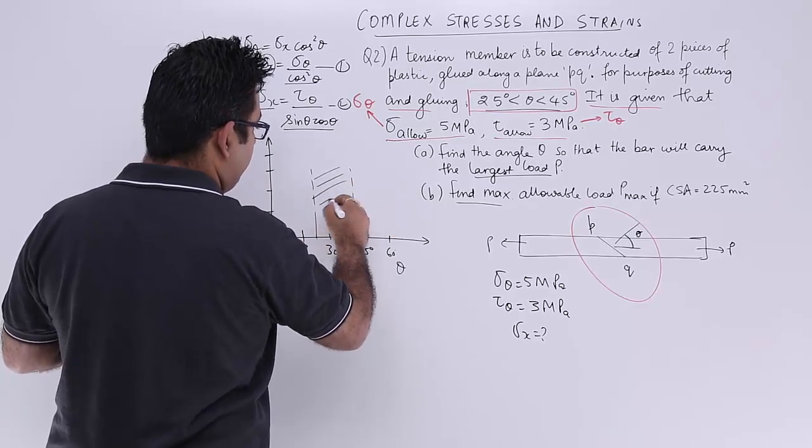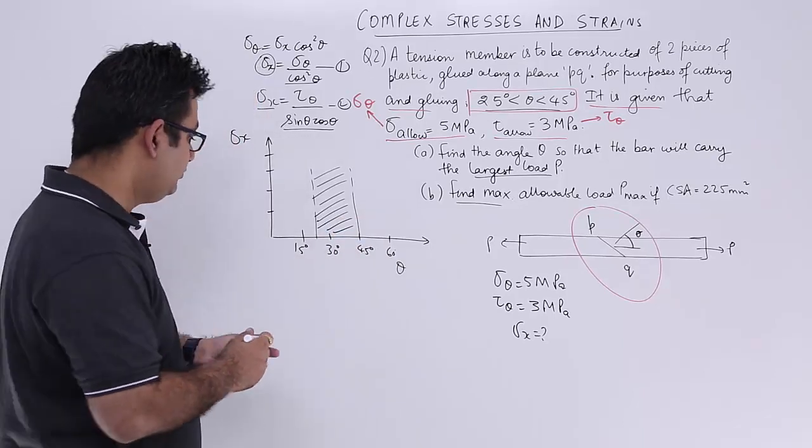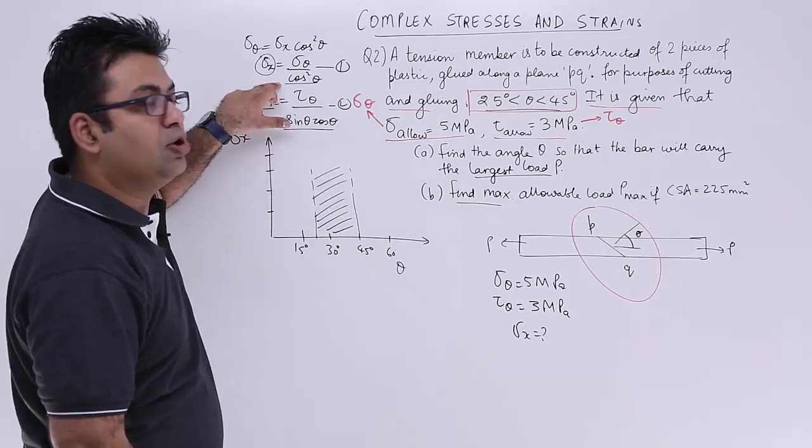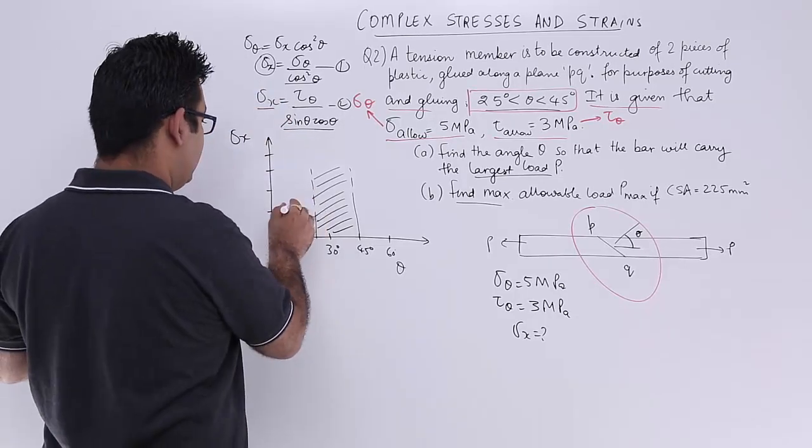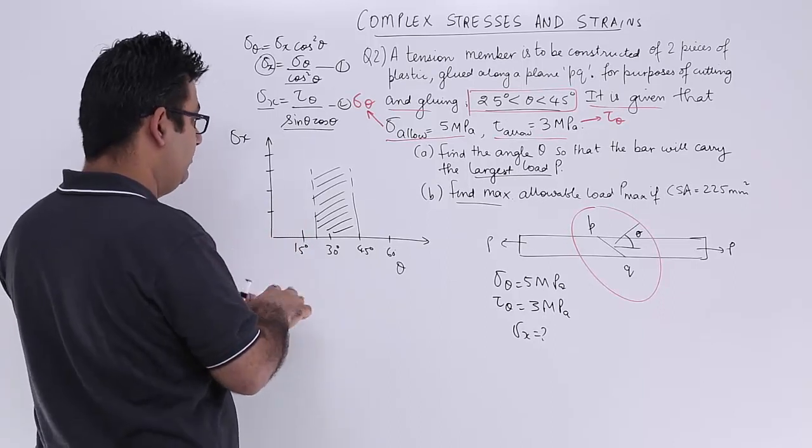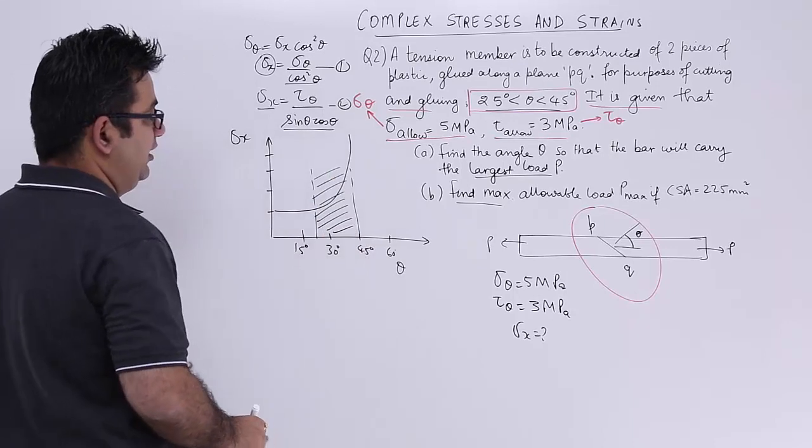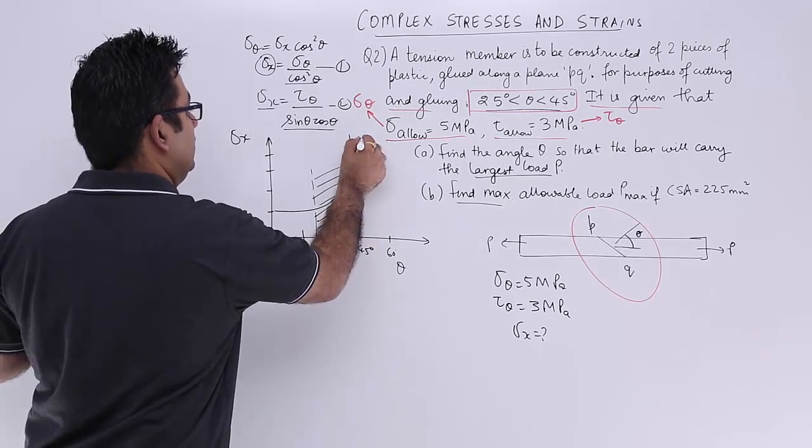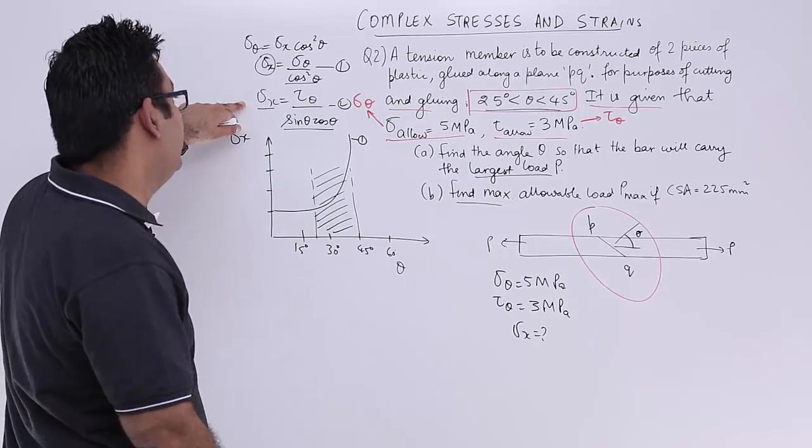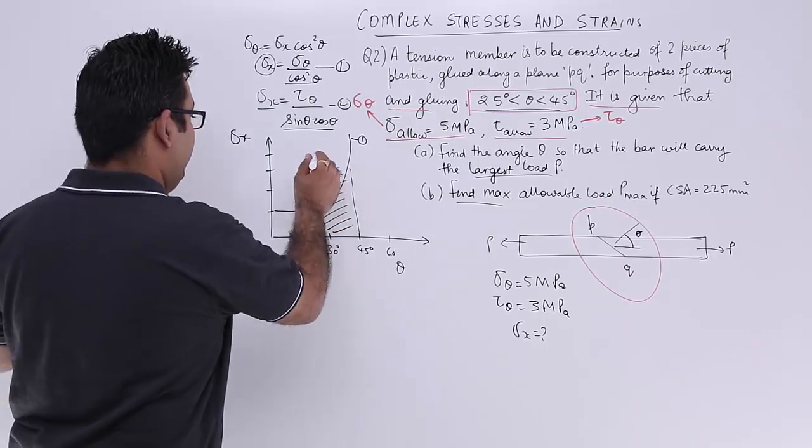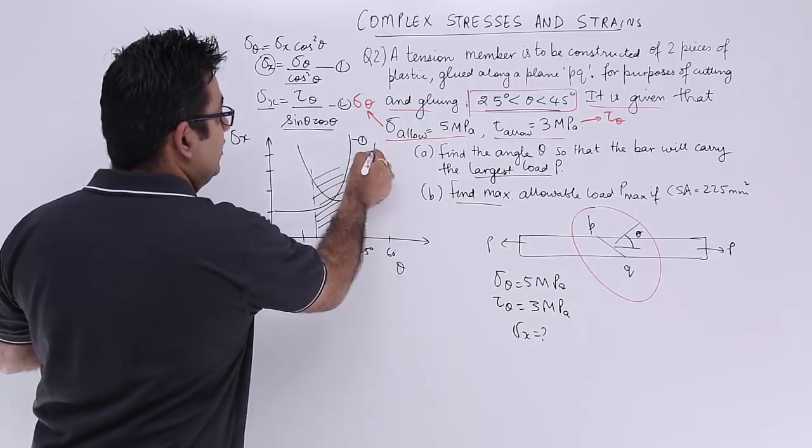So this is the region in which your theta should lie. If I draw the variation for 1 by cos square theta, it will look something like this. Let me draw with the black pen. This will take care of equation 1. If I draw the variation for 1 by sin theta cos theta, it will be something like this.